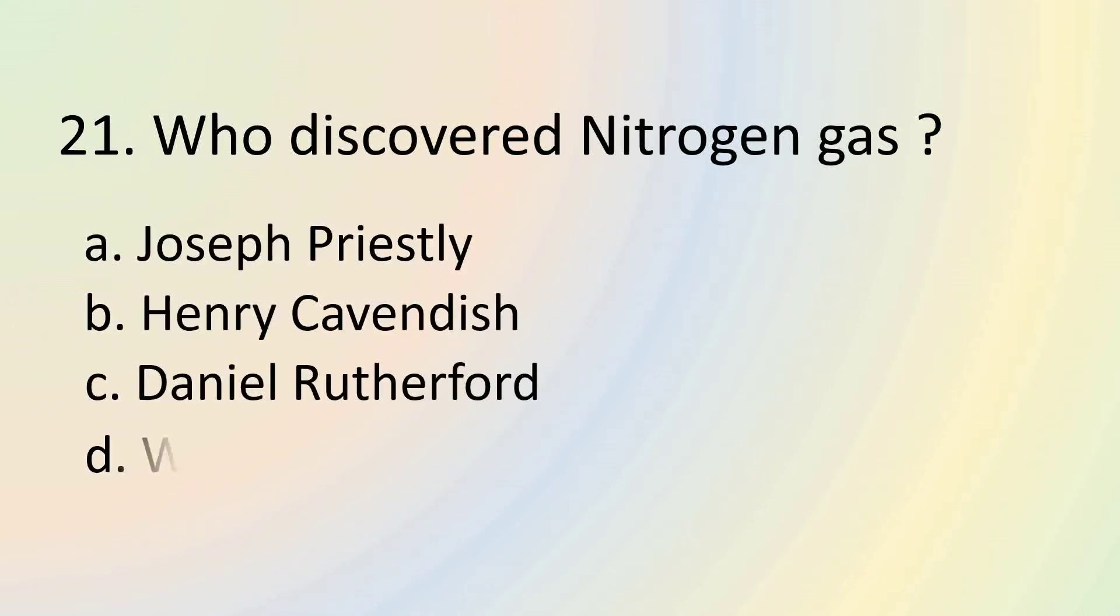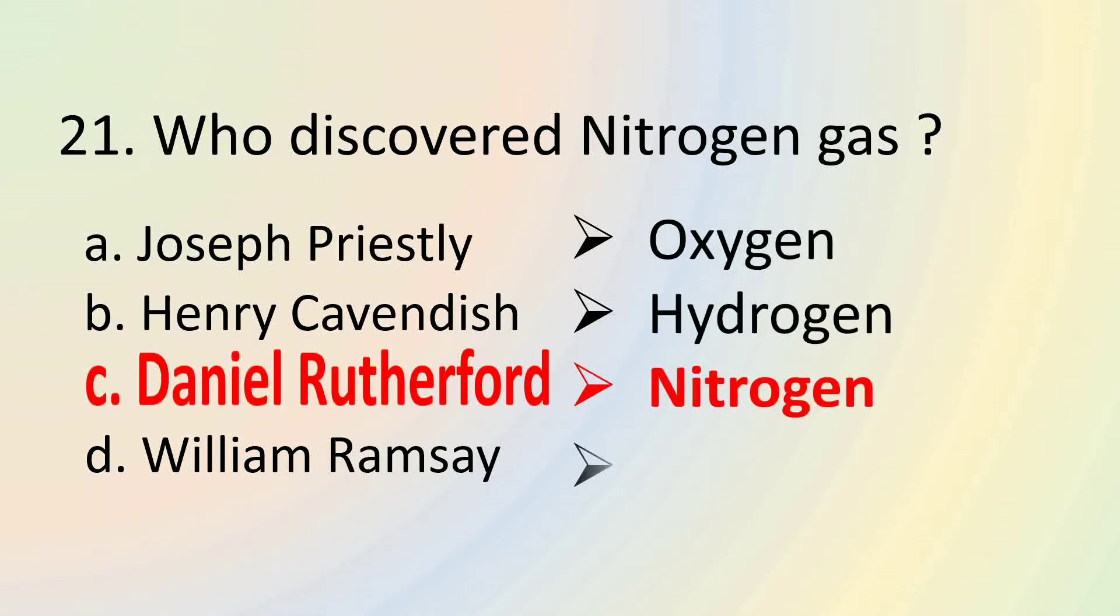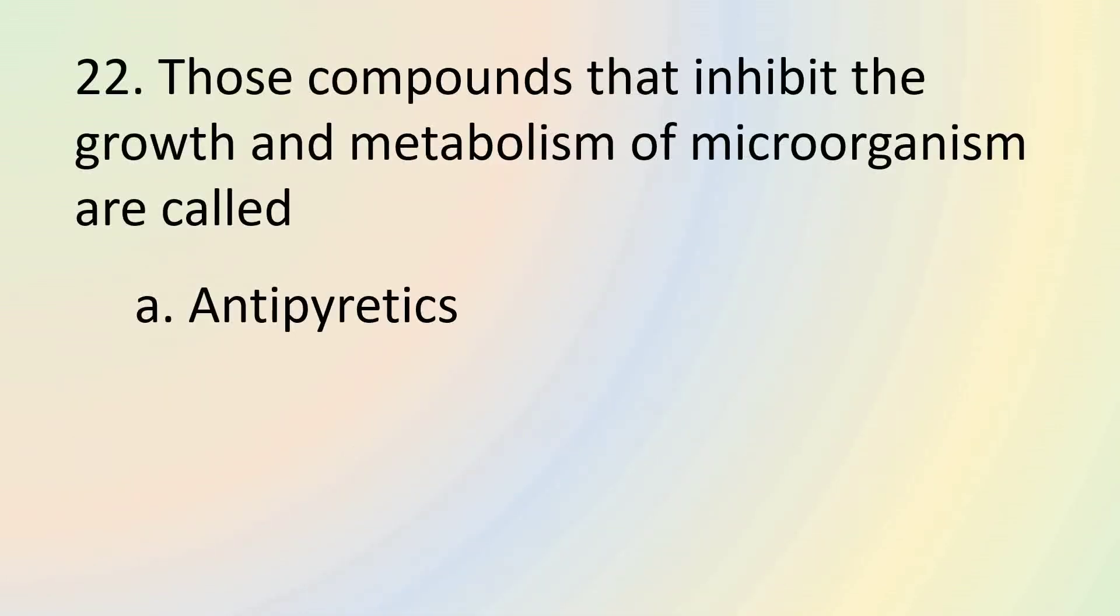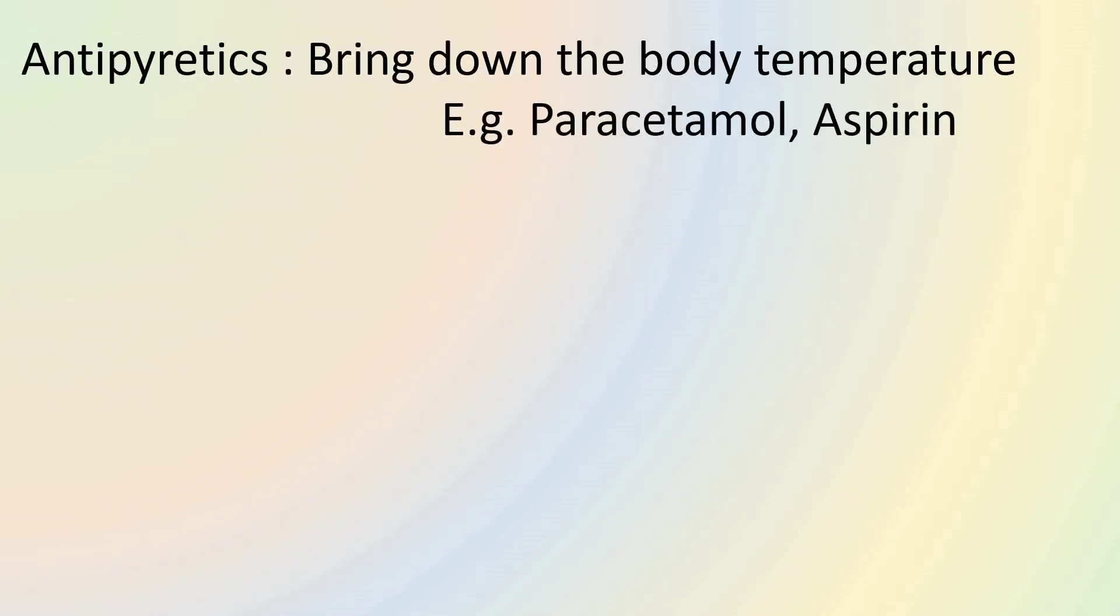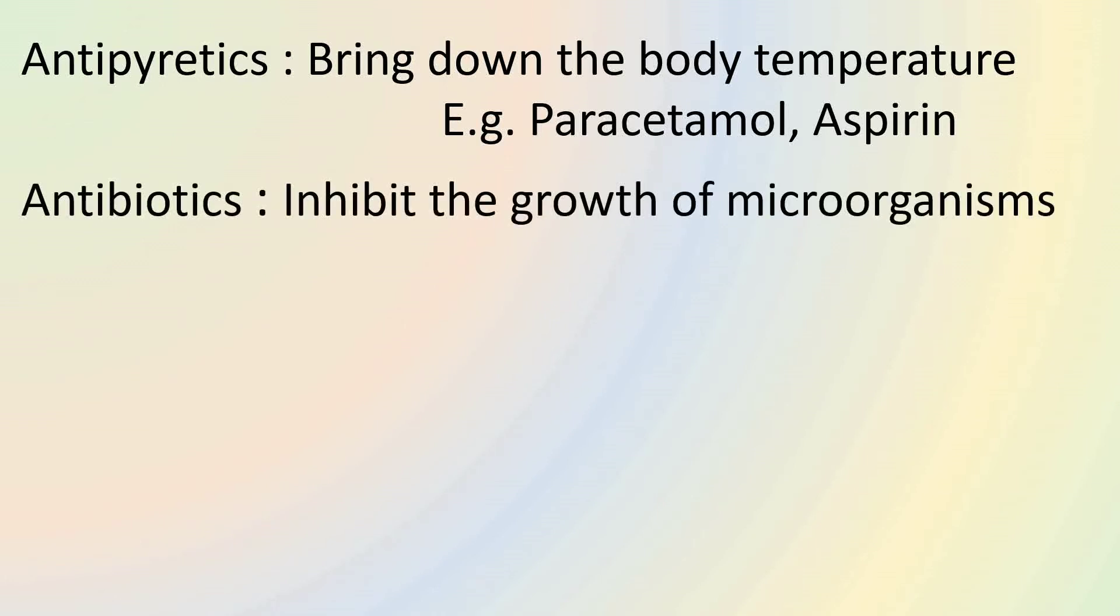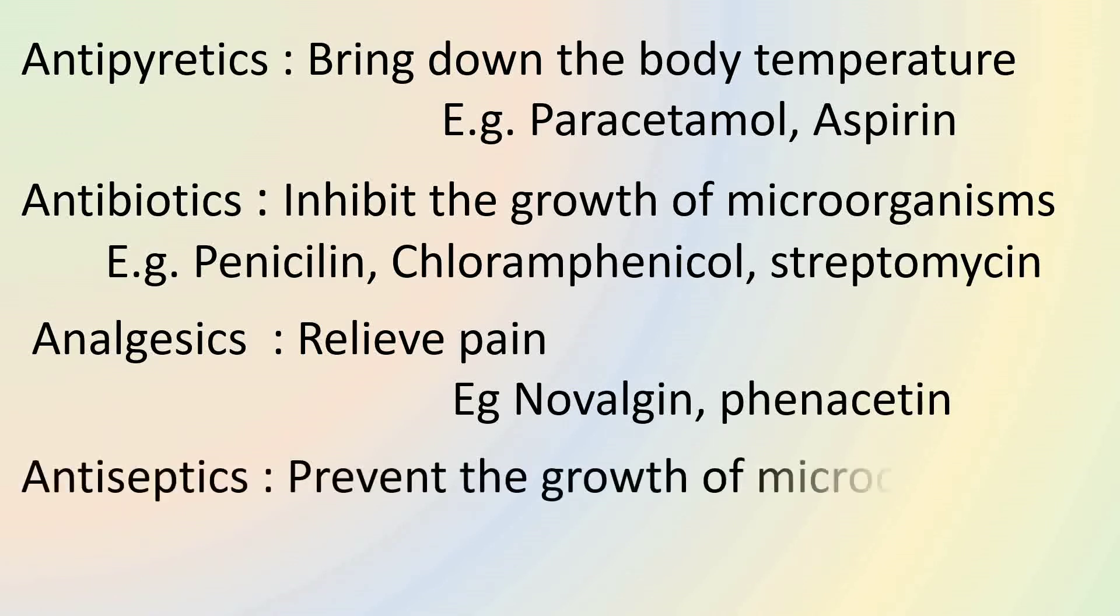Question number 21 asks us about the discovery of nitrogen gas. Nitrogen gas was discovered by Daniel Rutherford. Joseph Priestley discovered oxygen. Henry Cavendish discovered hydrogen, and William Ramsay discovered argon, neon along with other noble gases. Those compounds that inhibit the growth and metabolism of microorganisms are called antibiotics. Antipyretics are those compounds that bring down the body temperature. Examples include paracetamol and aspirin. Antibiotics are those compounds that inhibit the growth of microorganisms. Examples include penicillin, chloramphenicol and streptomycin. Analgesics relieve pain. Most antipyretics are analgesics as well. Example includes novalgin and phenacetin. Antiseptics prevent the growth of microorganisms. Examples include dettol and savlon.